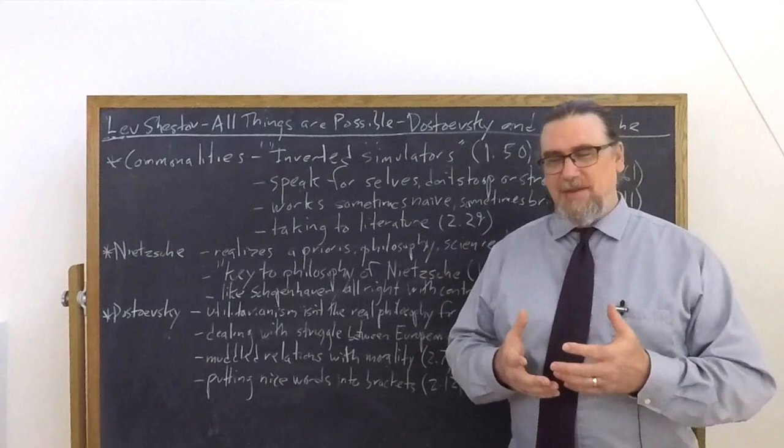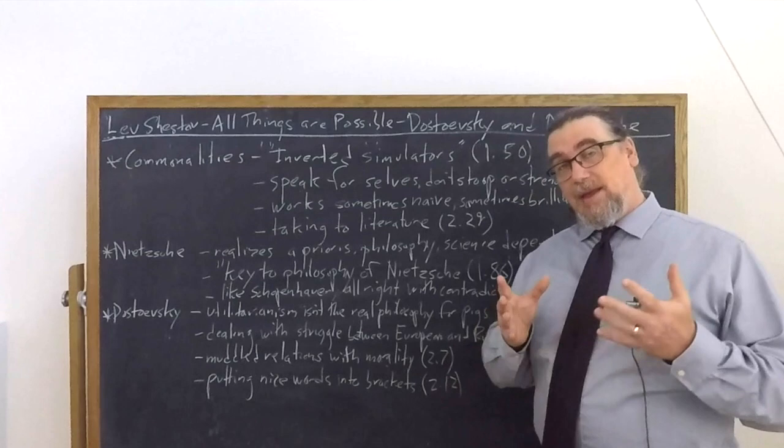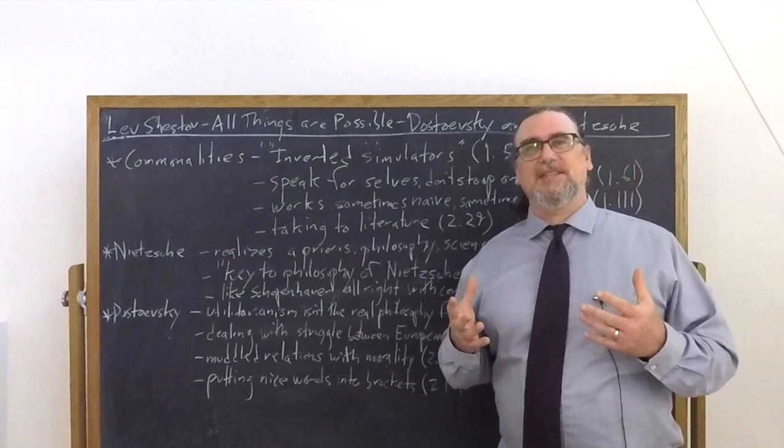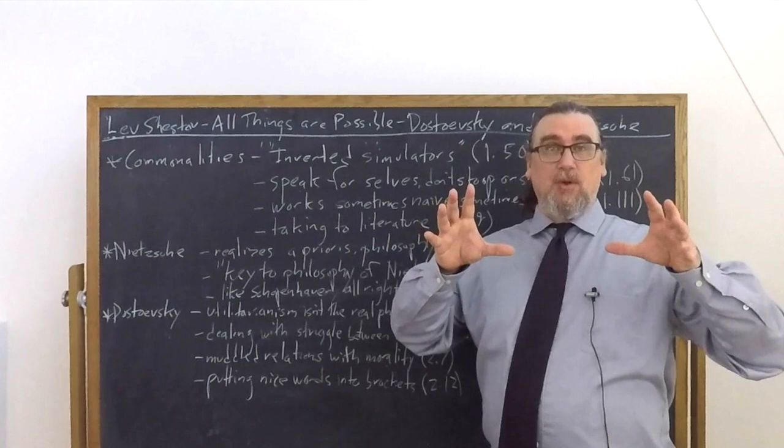This is quite important. Shestov is what we can call one of the very first of the second wave of existentialists, one of the people who realizes the continuity of ideas and approaches between the people who we identify as the first wave, in particular, in his case, Dostoevsky and Nietzsche, really early on.